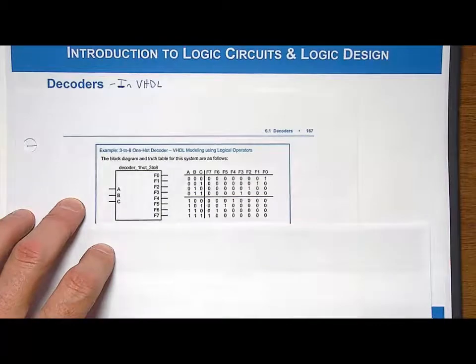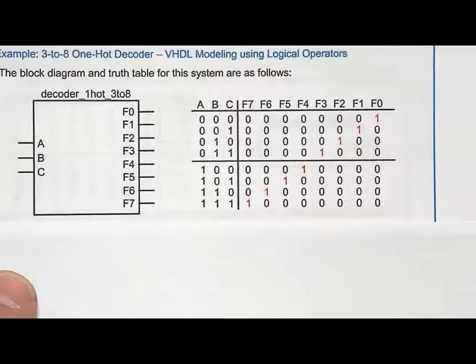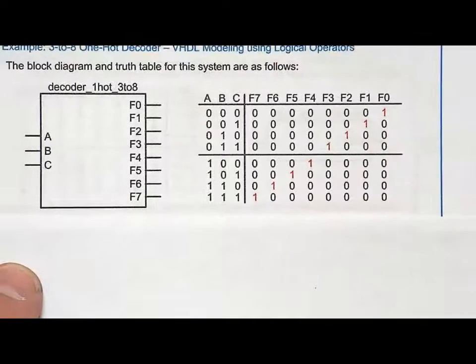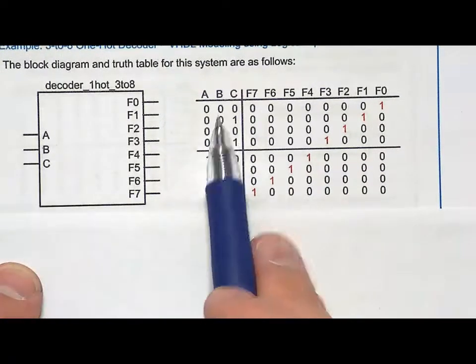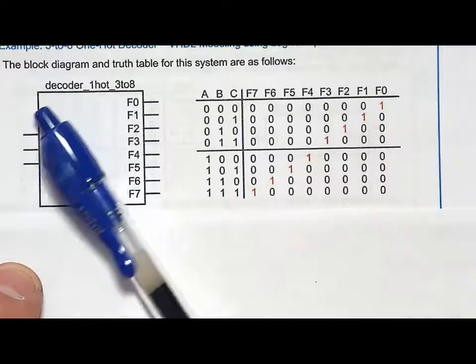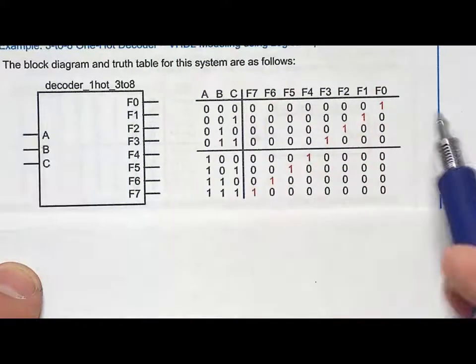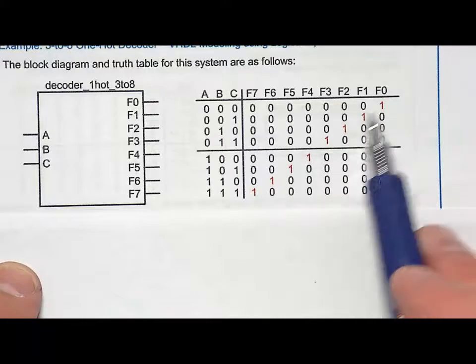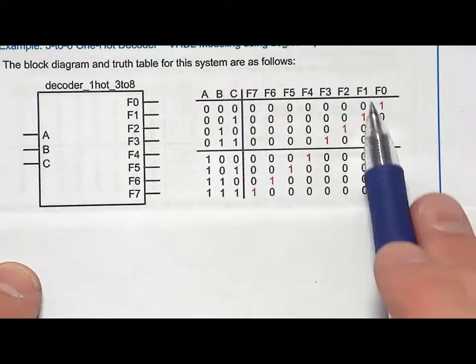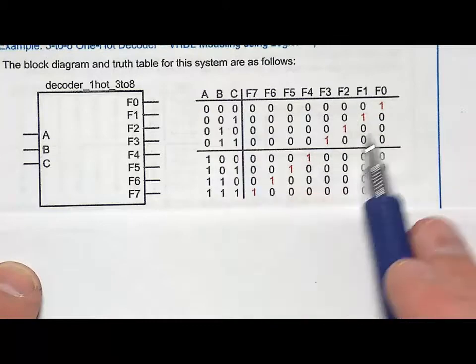So a 3 to 8 one hot decoder has a truth table that looks like this. And what's going to happen here is that each of the 3 inputs can take on 8 unique binary codes and each of the outputs will assert for one and only one input code. So the truth table looks like this. F0 only asserts for 000, F1 only asserts for 001, et cetera.